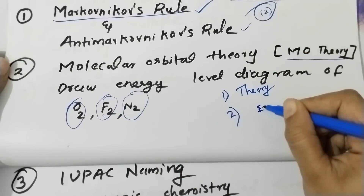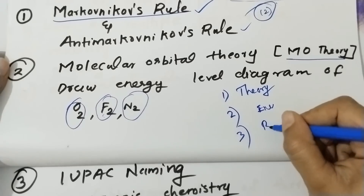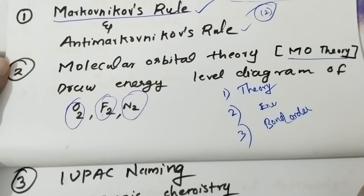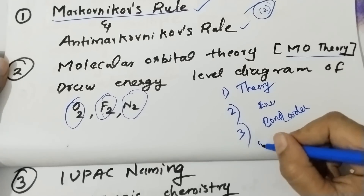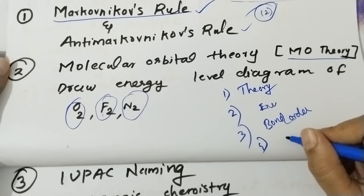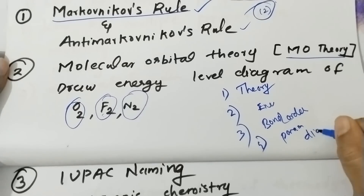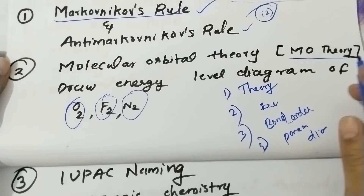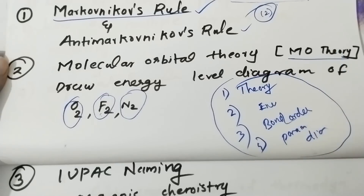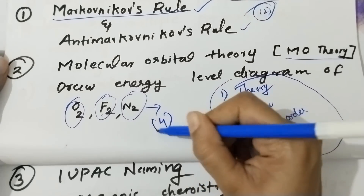From the energy level diagram, you can find the bond order. You can also determine whether the molecule is paramagnetic or diamagnetic. These are the third and fourth questions, and the first will answer the third — it will be available for three marks.